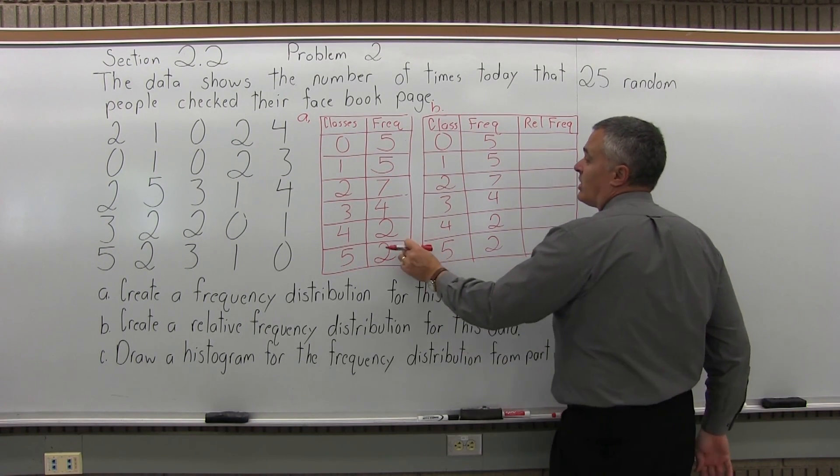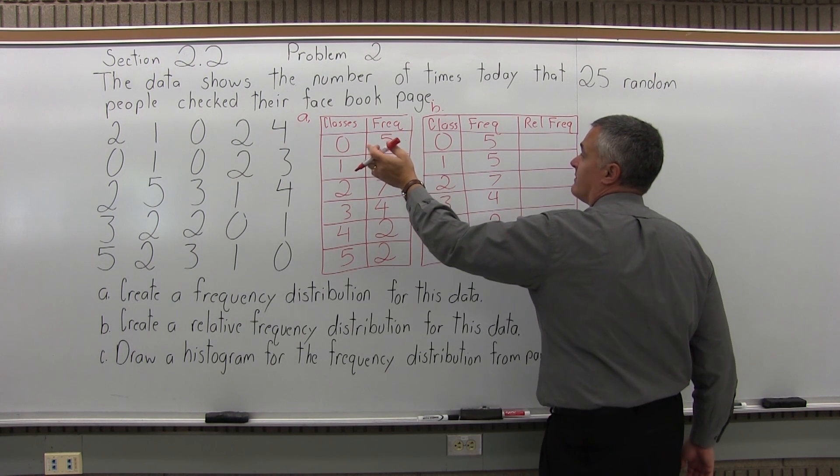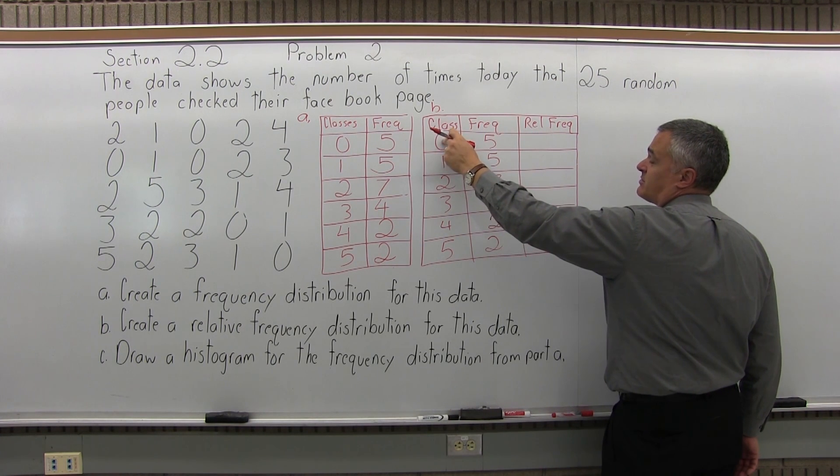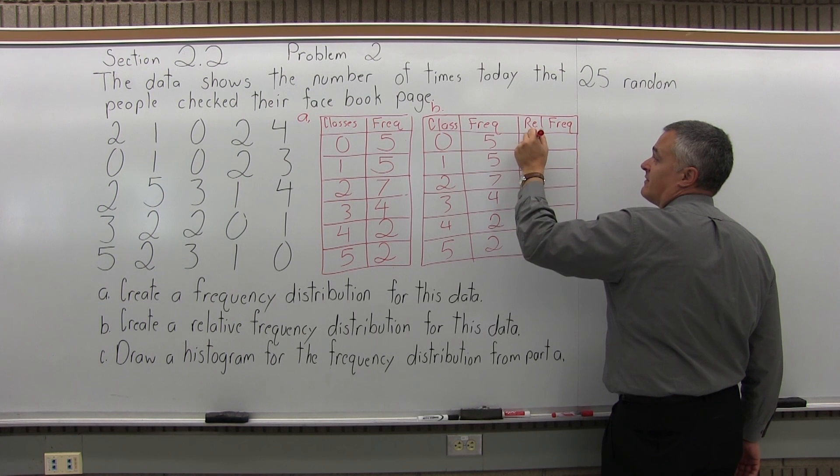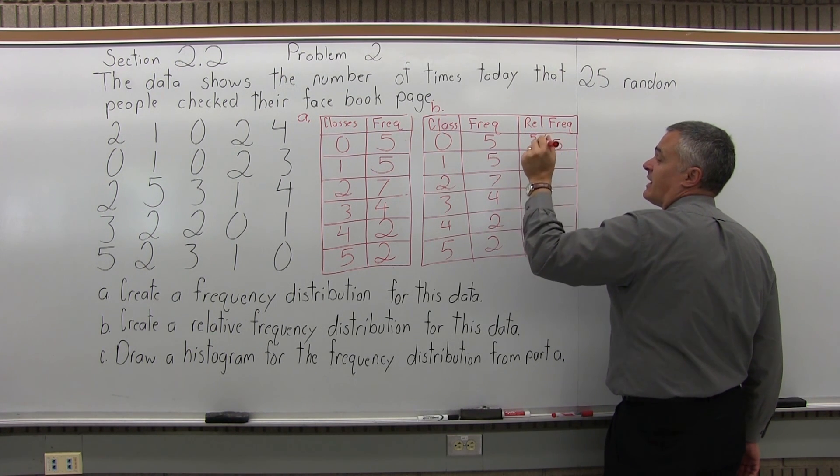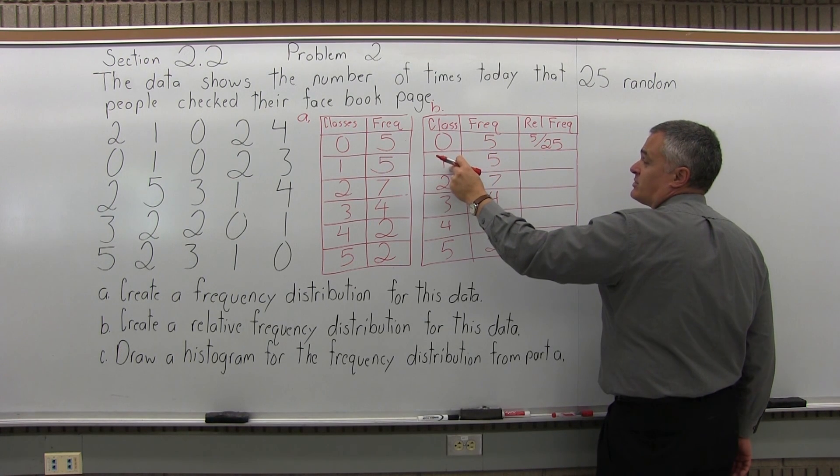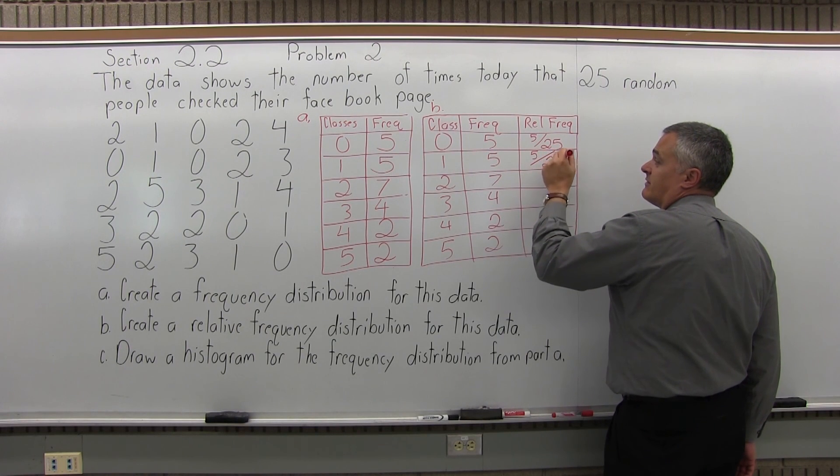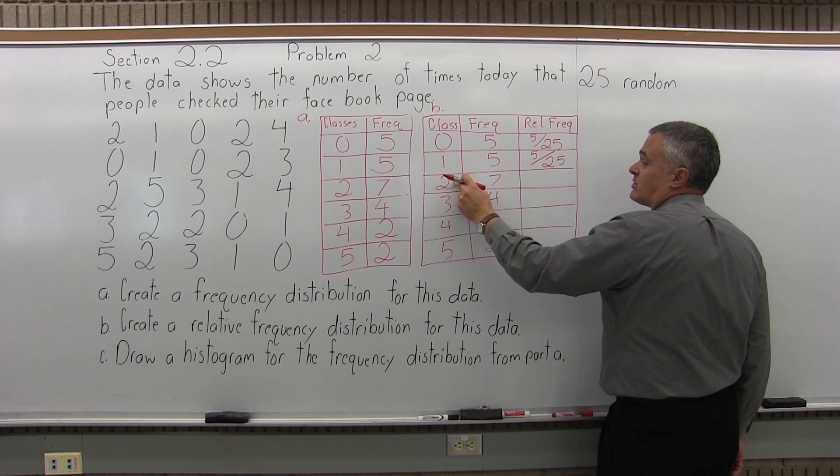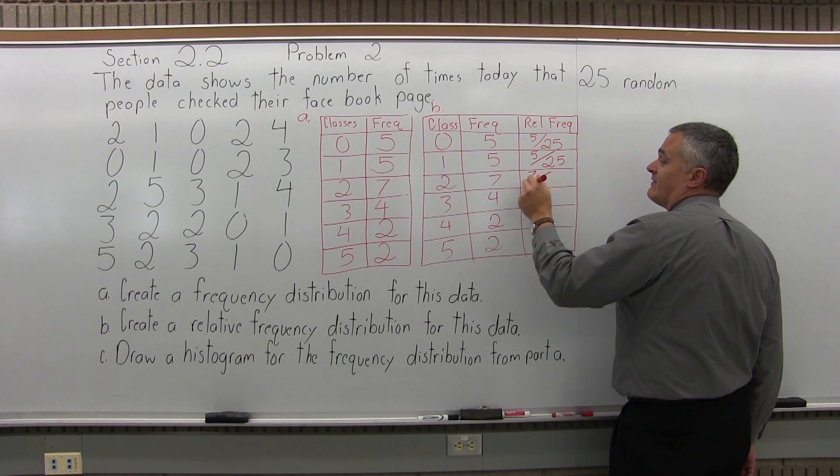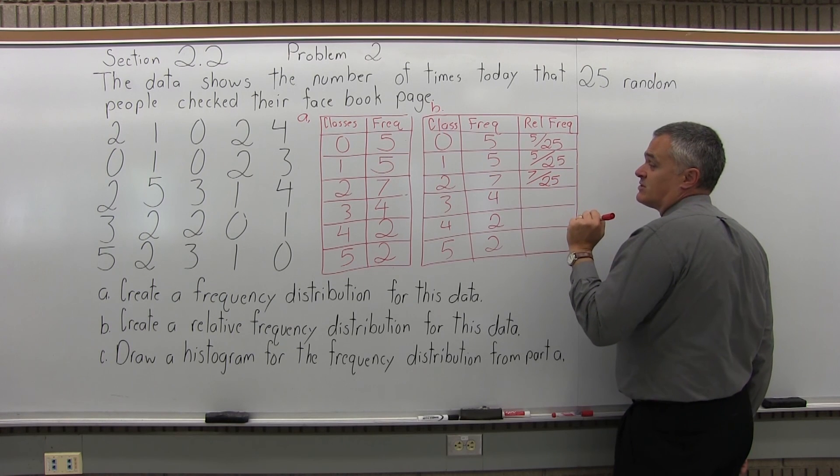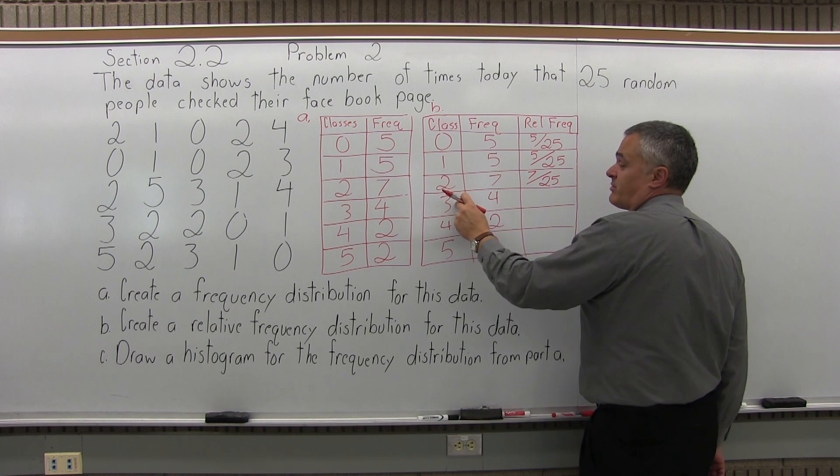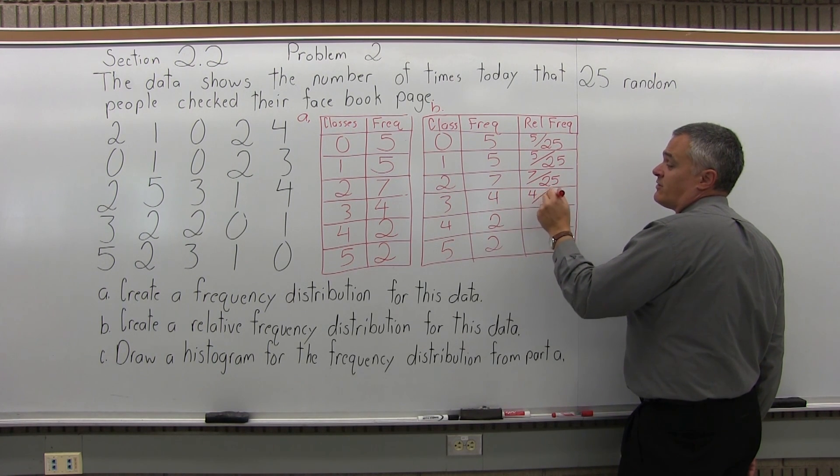So the total of all the frequencies when I added them up was a total of 25. So now, the first class, people who check zero times per day for Facebook, would be the frequency of five over the total of all the frequencies, which is 25. The second class, people who check Facebook once per day, would be the frequency of five over the total of all the frequencies, which is 25. Then the next class, people who check Facebook twice a day, would be the frequency for that class, which is seven over the total of all the frequencies, which is 25. Next, three times the people who check per day frequency is four over the total of all the frequencies, which is 25.